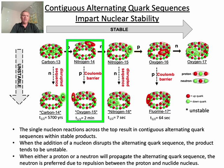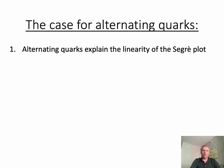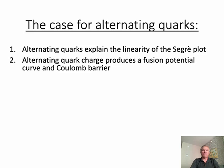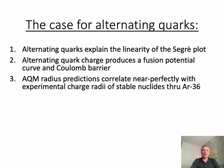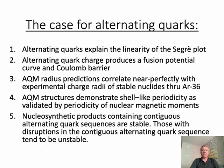Similarly, when we add a proton to nitrogen-14, we form unstable oxygen-15. Now, in this case, adding either a proton or a neutron can propagate the alternating quark sequence, but the neutron is favored owing to the coulombic repulsion between the proton and the nucleus. So, the case for alternating quarks includes: alternating quarks explain the linearity of the Sager plot through argon-36; alternating quark charge produces a fusion potential curve and Coulomb barrier; the AQM radius predictions correlate near perfectly with experimental charge radii; AQM structures demonstrate shell-like periodicity as validated by periodicity of nuclear magnetic moments; and nucleosynthetic products containing contiguous alternating quark sequences are stable and those that don't are unstable.